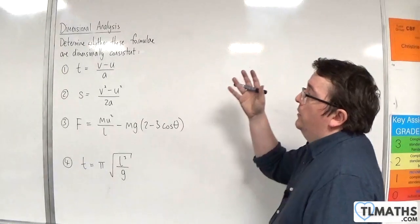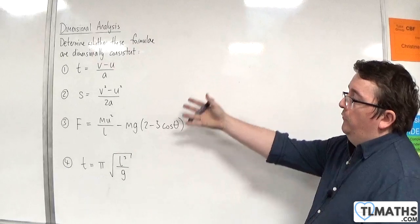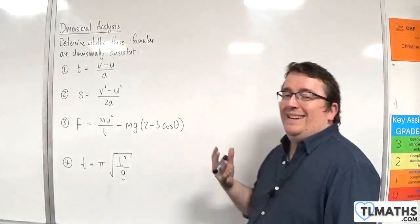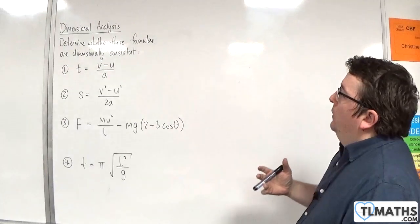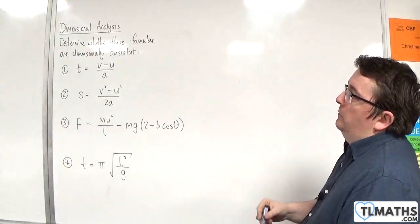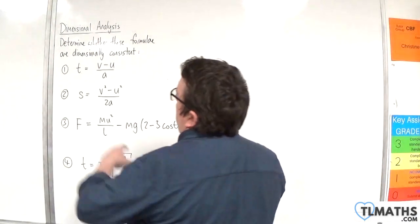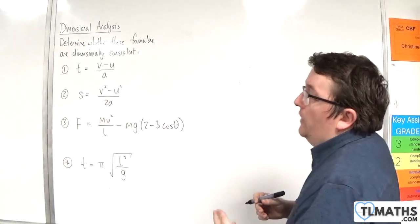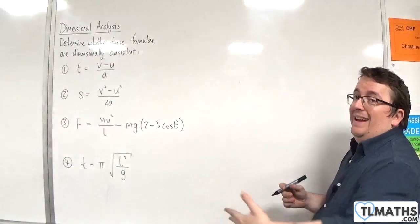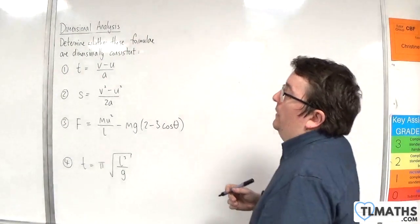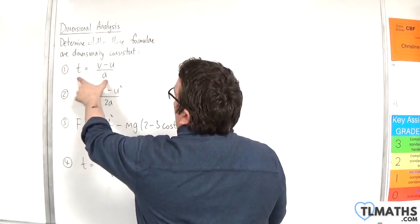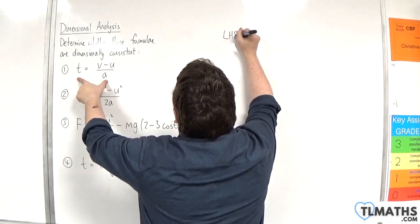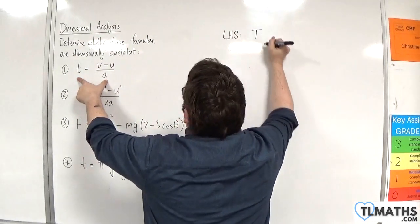In this video we're going to work through four formulae and determine whether they are dimensionally consistent. Let's look at the first example: t = (v - u) / a, where u is the initial velocity, v is the final velocity, a is the acceleration, and t is time. On the left-hand side we have t.